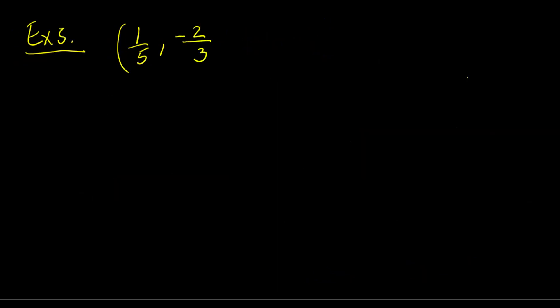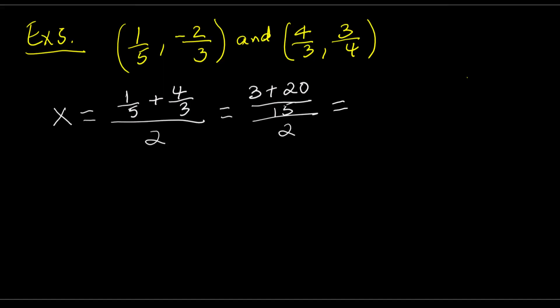Example 5, what is the midpoint of (1/5, -2/3) and (4/3, 3/4)? Add the x values. 1/5 plus 4/3 over 2. Using a common denominator of 5 and 3, which is 15. 15 divided by 5 is 3, and 3 times 1 is 3. 15 divided by 3 is 5, and 5 times 4 is 20. Now we have 3 plus 20 over 15. 3 plus 20 equals 23. So we have 23/15. Now divide by 2. 23/15 divided by 2. Using the rule for dividing a fraction by a fraction, we have 23/15 multiplied by 1/2, which gives 23/30. The x value of the midpoint is 23/30.